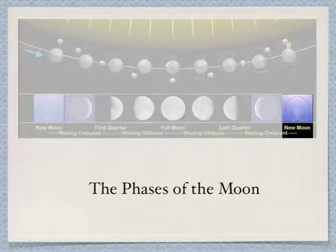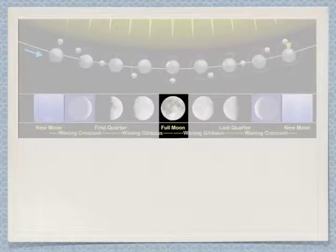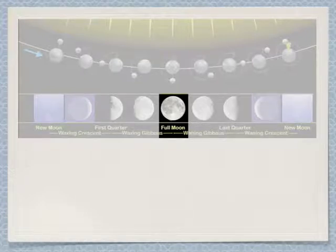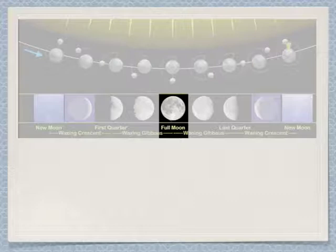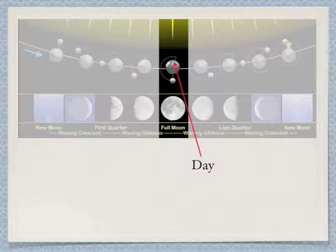The question we will attempt to answer is: how do the phases change? Why does the moon appear different at different times of the month? We will begin by analyzing the full moon, which is perhaps one of the easier phases to understand. The moon appears full when the entire side that reflects the light of the sun is visible to an observer on earth. If we look at the earth, the moon, and the sun from above — this is a bird's eye view — in this diagram, the side of the earth that faces the sun has day, and the side facing away has night.